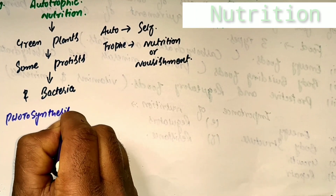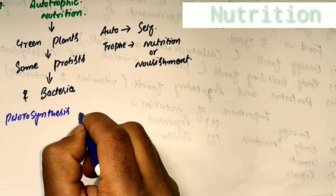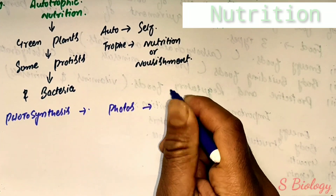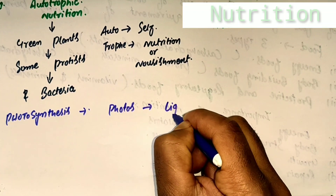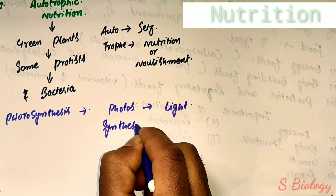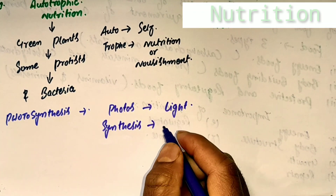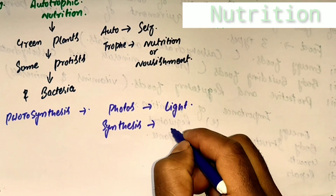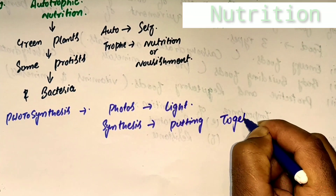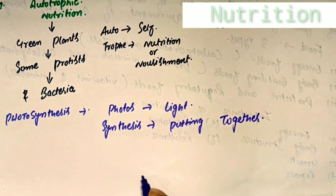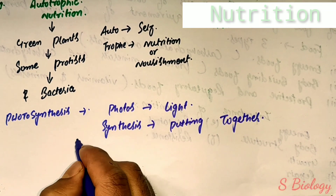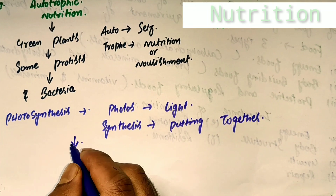Green plants manufacture their own food with the help of sunlight through the process called photosynthesis. Photos means light and synthesis means putting together. Photosynthesis is a biochemical process of manufacture of organic food from carbon dioxide and water with the help of solar energy inside chlorophyll-containing cells, by which oxygen is liberated. The main products of photosynthesis are carbohydrates or sugar, for example glucose. Glucose is stored as starch in plants.